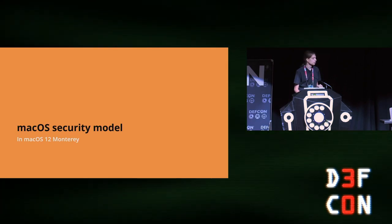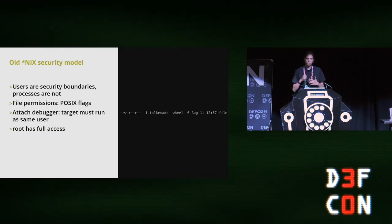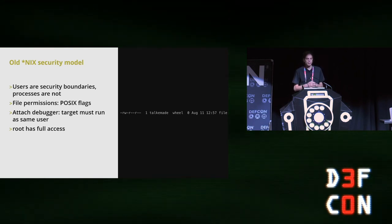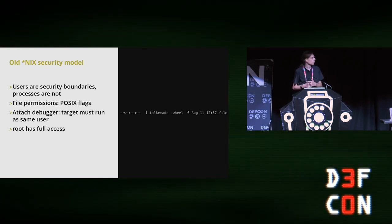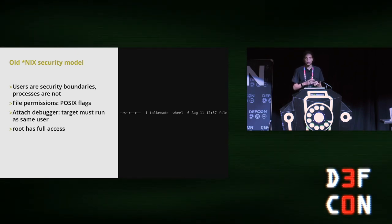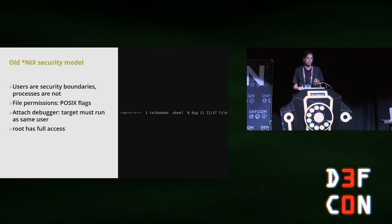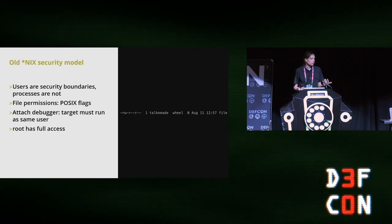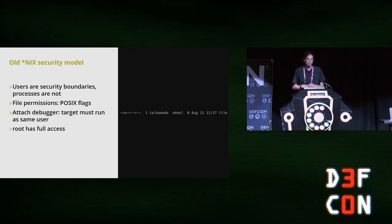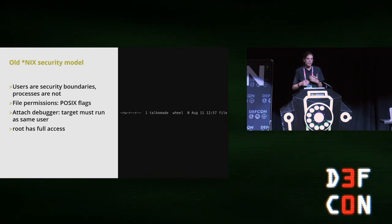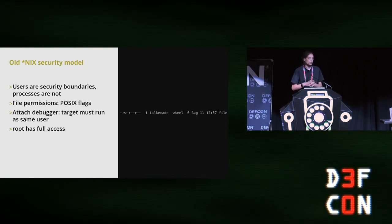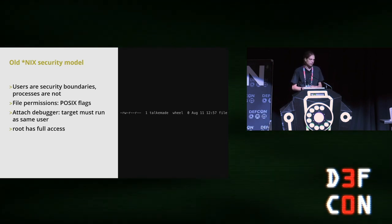So first, the macOS security model. To describe it, I'll start with the Unix-y security model that used to be used by macOS. The basic idea is that users are security boundaries, but processes are not. File permissions are determined by owner and group — nine bits determining whether owner, group, or everybody can read, write, or execute. If you want to attach a debugger to another process, in general those need to be running as the same user. The root user always has access to all files and can attach to any process, and can therefore access all data on the system.